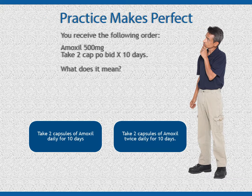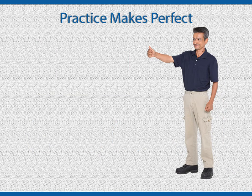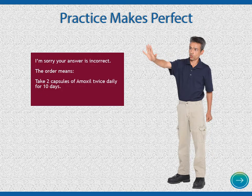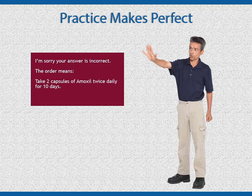You received the following order: Amoxil 500 mg, take 2 cap P.O. B.I.D. times 10 days. What does it mean? The answer is: take 2 capsules by mouth twice daily for 10 days.